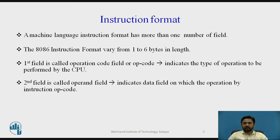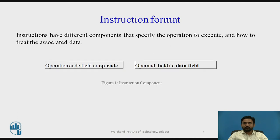The second field is called the operand field, also known as the data field. Instructions have different components that specify the operation to execute and how to treat the associated data. The opcode field indicates the type of operation to be performed by the CPU, and the operand field specifies the data.